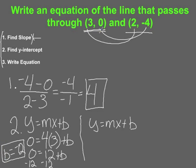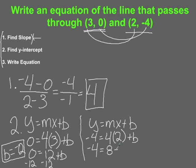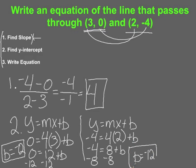Now let's try it with the other point to see if we get the same thing. My y is negative 4, slope is positive 4, and x is 2. That gives negative 4 equals 8 plus b. Subtracting 8 from both sides, b equals negative 12. So doing it with both points, we get the exact same answer for our y-intercept. It doesn't matter which point you use — you get a y-intercept of negative 12 either way.